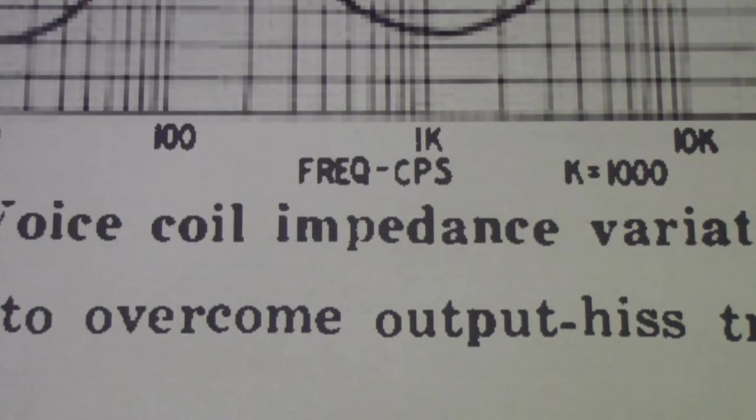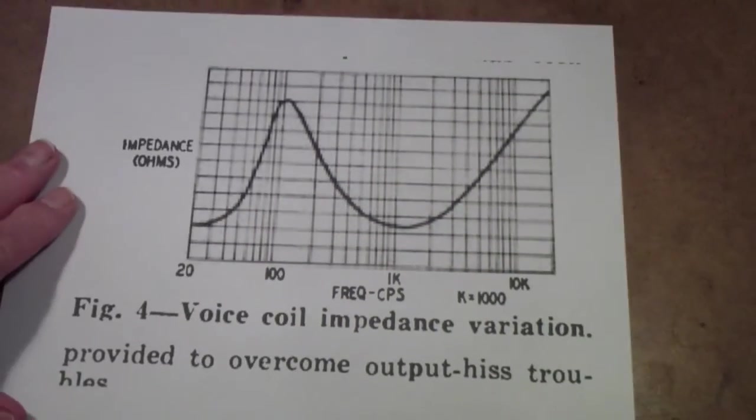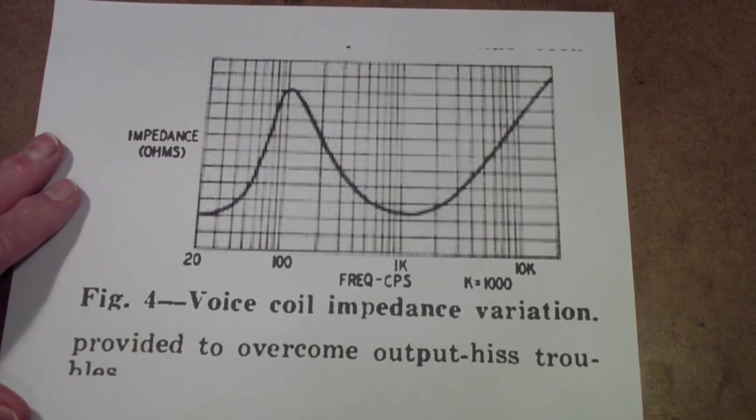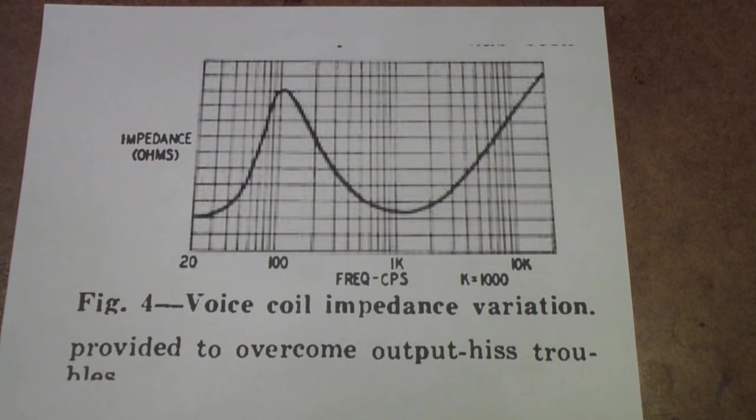Finally, one of the things that I never talked about—I mentioned that speaker manufacturers were working on better speakers. One of the problems with all speakers is that the impedance of a speaker changes with frequency. The reason is it's a coil made with wire, so it has both inductance, capacitance, and resistance. It's an RLC circuit.